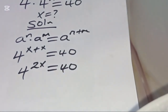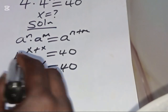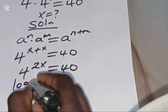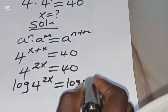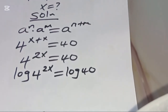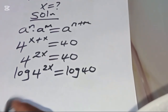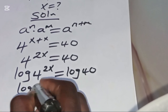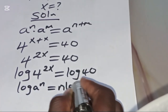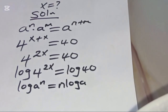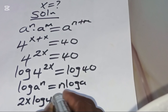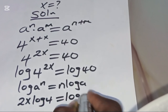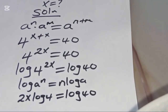To solve for x, we introduce the logarithm on both sides. We have log(4^(2x)) = log(40). Now log(4^(2x)) is in the form of log(a^n), which equals n·log(a). So 4^(2x) becomes 2x·log(4) = log(40).